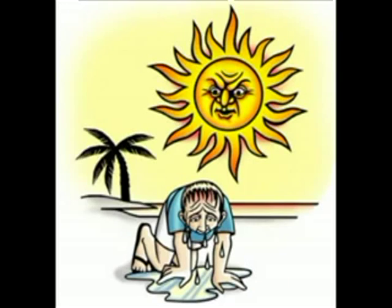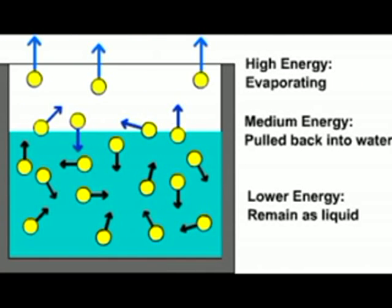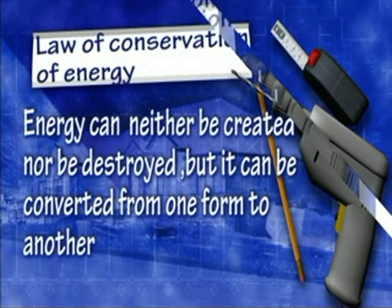Heat is a form of energy. Heat content of a body may be defined as the sum of the kinetic energies of all the molecules in it, and temperature is the average kinetic energy of all the molecules in it.